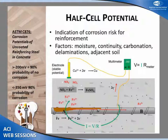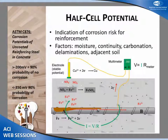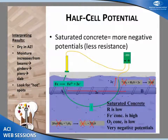Half-cell potential is tested per ASTM C876. You tap an electrical connection to the reinforcement and run the other lead to a copper-copper sulfate electrode that has a stable potential, measuring the potential difference using the concrete as the electrolyte. If you have ongoing corrosion, that process gives you a negative number. ASTM C876 states that anything more negative than negative 350 millivolts gives you a 90% probability that corrosion is ongoing at that location.